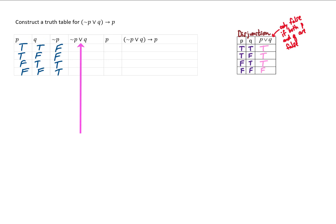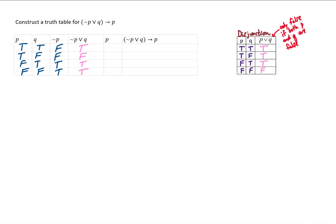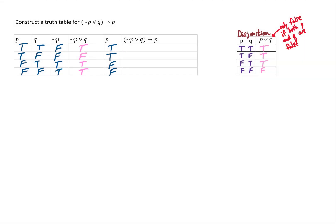Our next column involves a disjunction — we're comparing not P to Q. Using our rules for disjunction, we get true in this column unless both values we're comparing are false. Then I'll copy my P column down one more time. For our final answer, this statement says we need to compare the not P or Q column with the P column using a conditional.